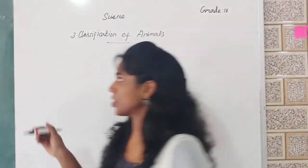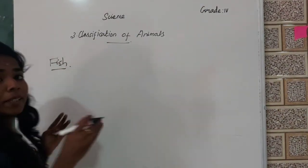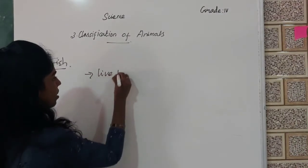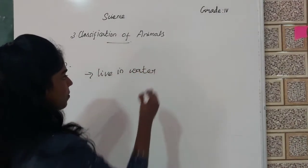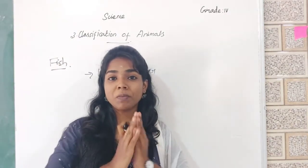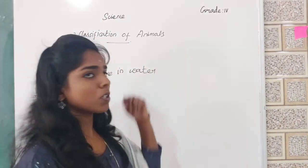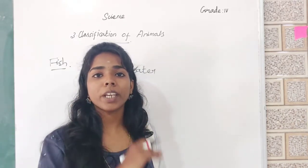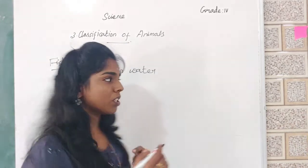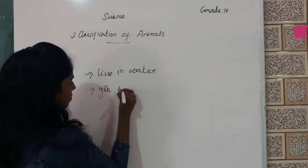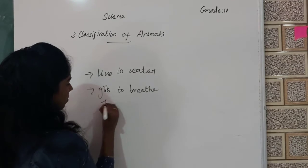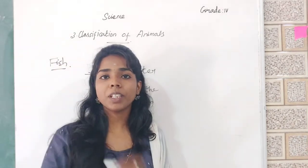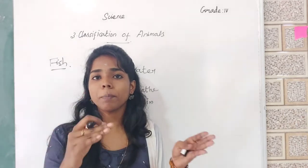Students, the first group is fish. Now tell me the features of fish. Fish can live in water. There are varieties of fish. They have gills to breathe and fins to swim. They have special body parts to survive in water.